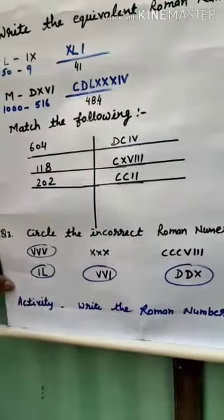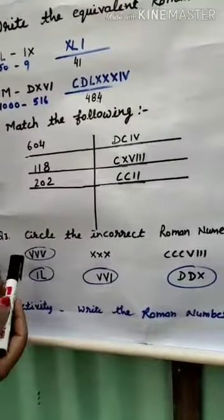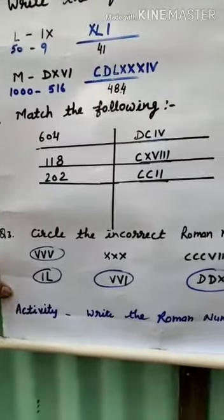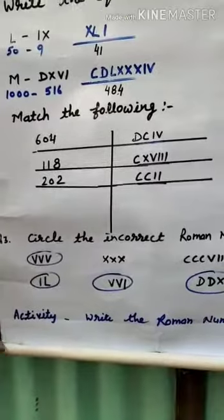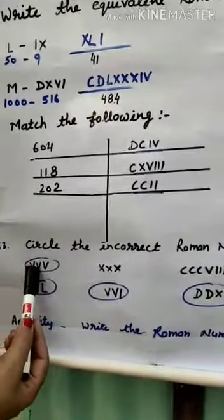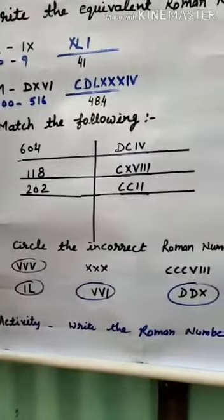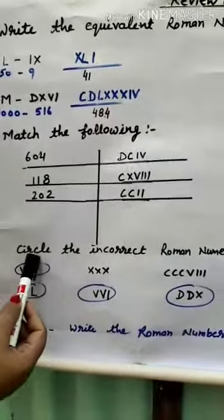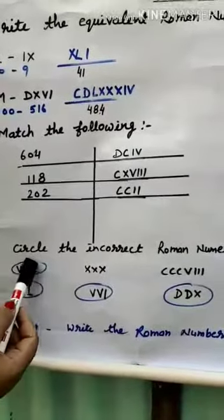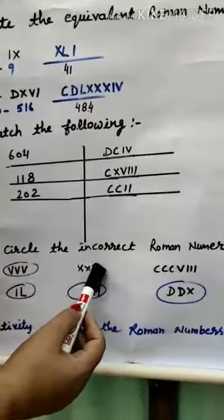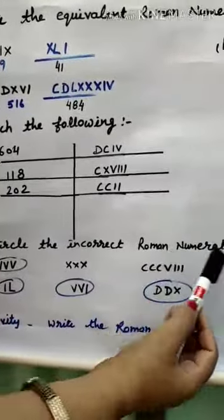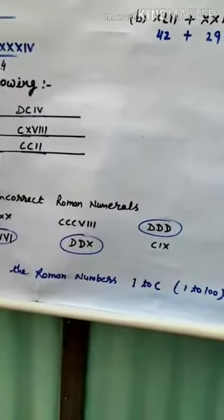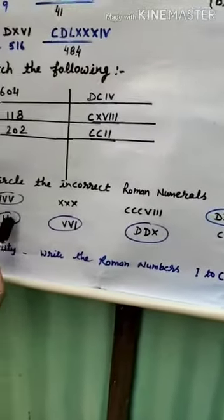Question 3: Circle the incorrect Roman Numeral. As I explained in the explanation video, V, L, and D are never repeated. So VVV (three V's) is wrong. XXX is correct. DDD is wrong because D cannot be repeated.